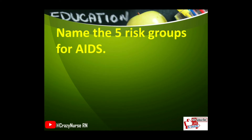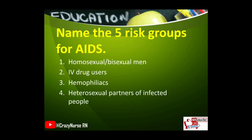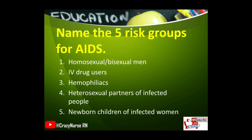Name the five risk groups for AIDS. Homosexual and bisexual men, IV drug users, hemophiliacs, heterosexual partners of infected people, and newborn children of infected women.